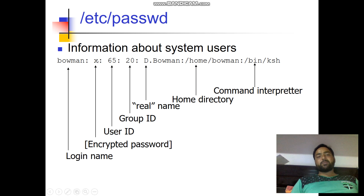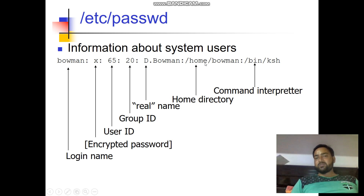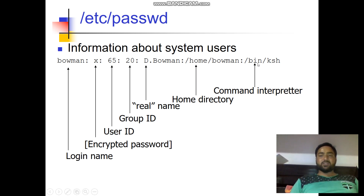'x' is the encrypted password — it is the hidden identity in which the password is stored in encrypted format. '65' is the user ID through which the system identifies the particular user. '20' is the group ID — which group the user belongs to. 'D.Bowman' is the real name of the user. '/home/bowman' is the home directory, and '/bin/ksh' is the command interpreter — the Korn shell — through which commands are executed.